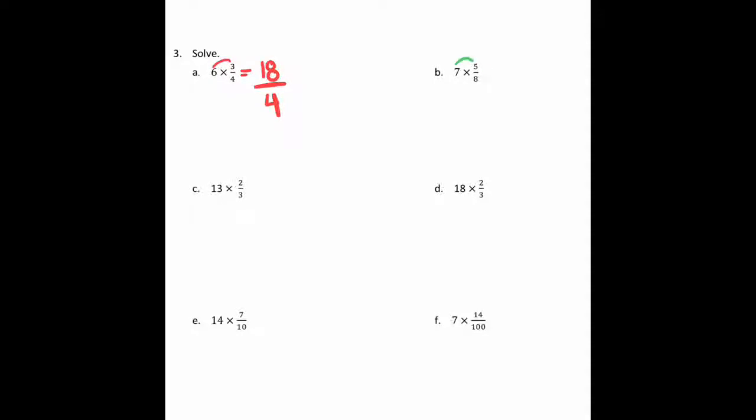On B it says 7 times 5 eighths, so I'm going to get 35 eighths, because 7 times 5 is 35. On C you have 13 times 2 thirds. Well, 13 times 2, if you don't know that fact, you could just say 13 plus 13 over here, and you'll get 26. So I have 26 thirds.